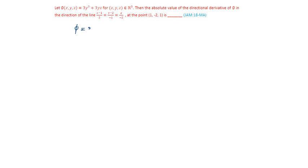Phi is given as 3y squared plus 3yz. Del phi will be ∂phi/∂x times i bar, plus ∂phi/∂y times j bar, plus ∂phi/∂z times k bar.